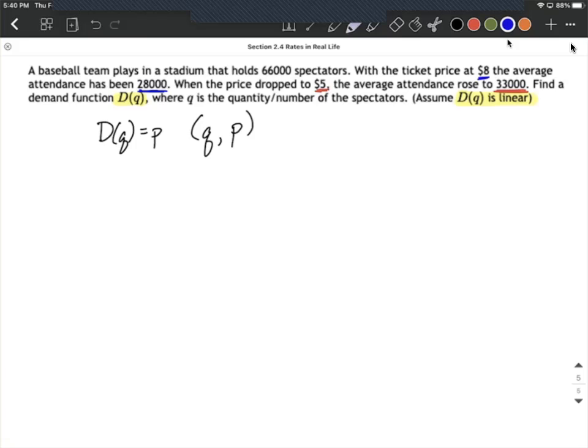The next thing is this is linear. So basically we have two ordered pairs. We have the blue pieces of information that go hand in hand. We have a quantity of 28,000 goes along with a price of 8, and we have the red information where a quantity of 33,000 goes along with a price of $5. So as I set this up, what I'm going to do is treat this as Q1 and P1, Q2 and P2.